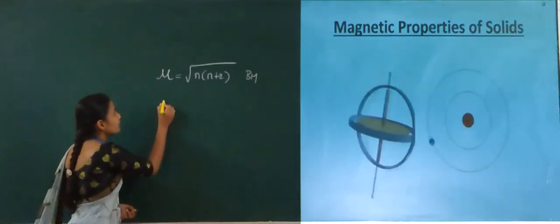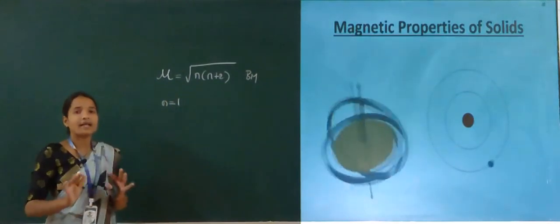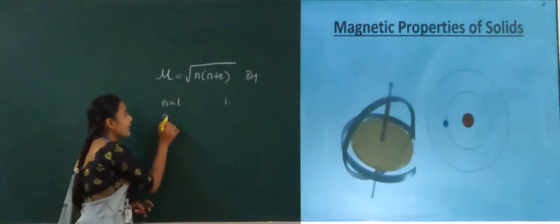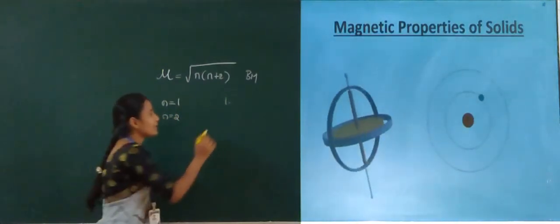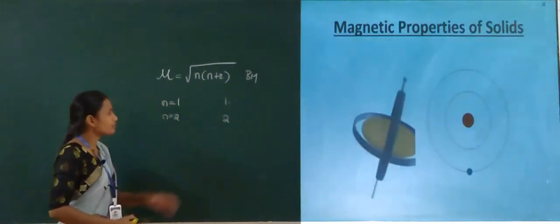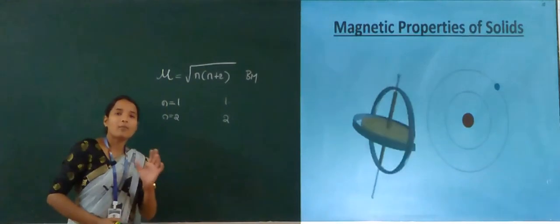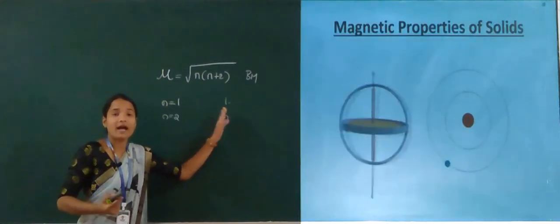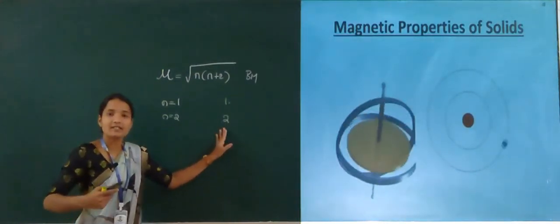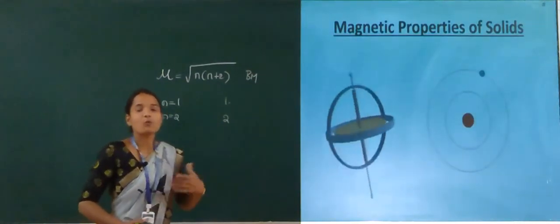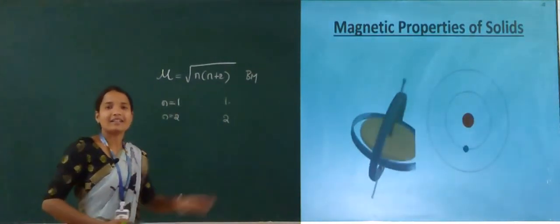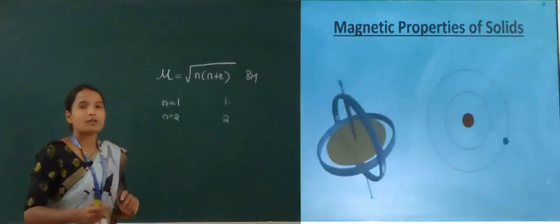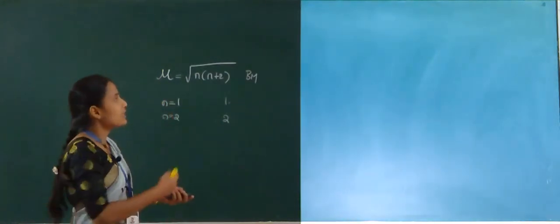Here, n represents the number of unpaired electrons. For example, if n = 1, the magnetic moment is 1-point-something; if n = 2, it is 2-point-something; and for n = 3, it is 3-point-something. The magnetic moment depends directly on the number of unpaired electrons.